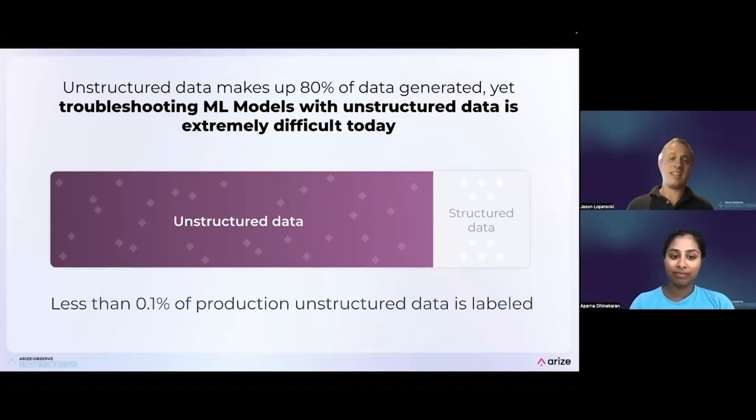We did a survey of our teams and 80% of the data out there that teams deal with in a production setting is unstructured data. And then add on to that, 0.1% of that data is labeled. You cannot tell what it's doing. It's very hard for a model to understand if what it's doing and how it's acting on this data is correct. Very tough to work with.